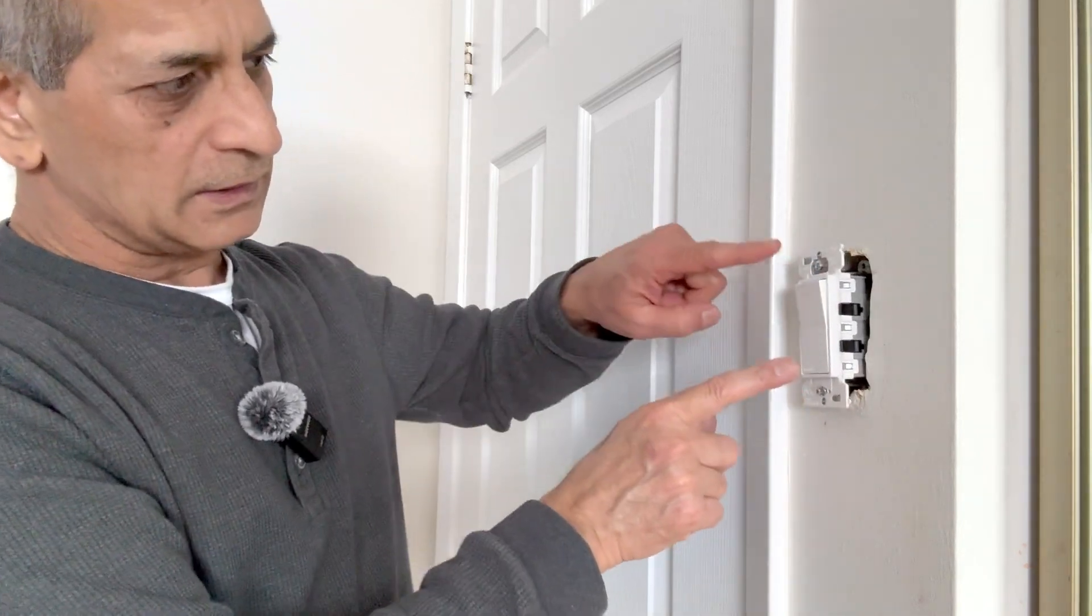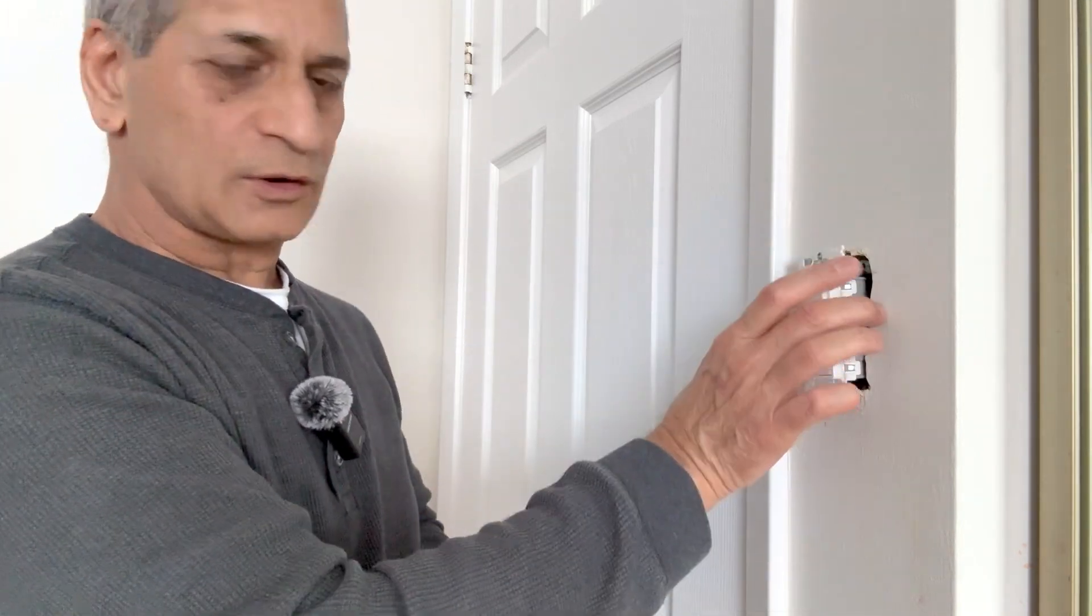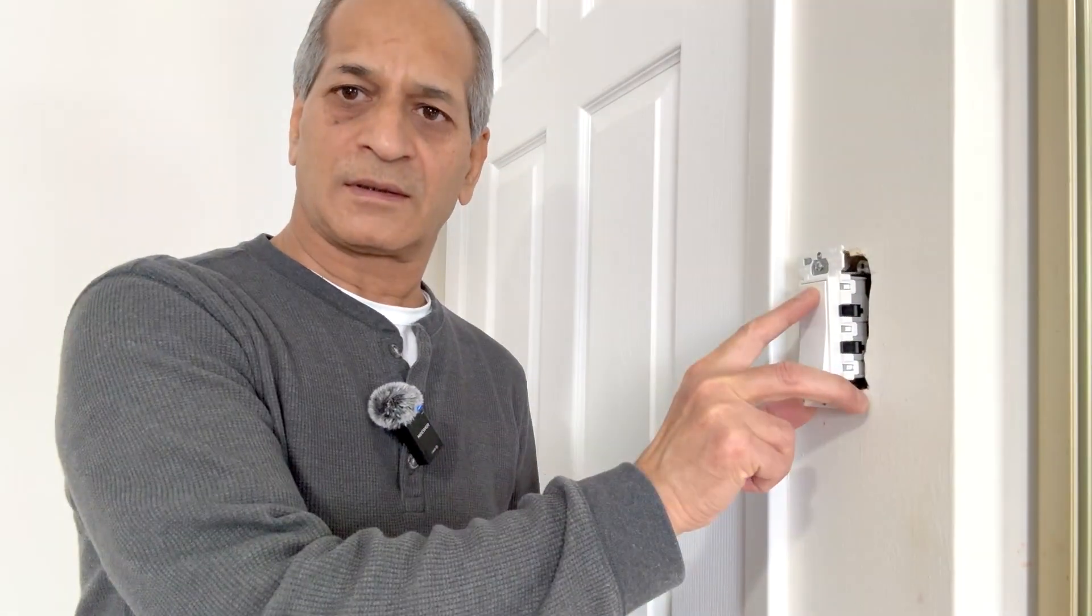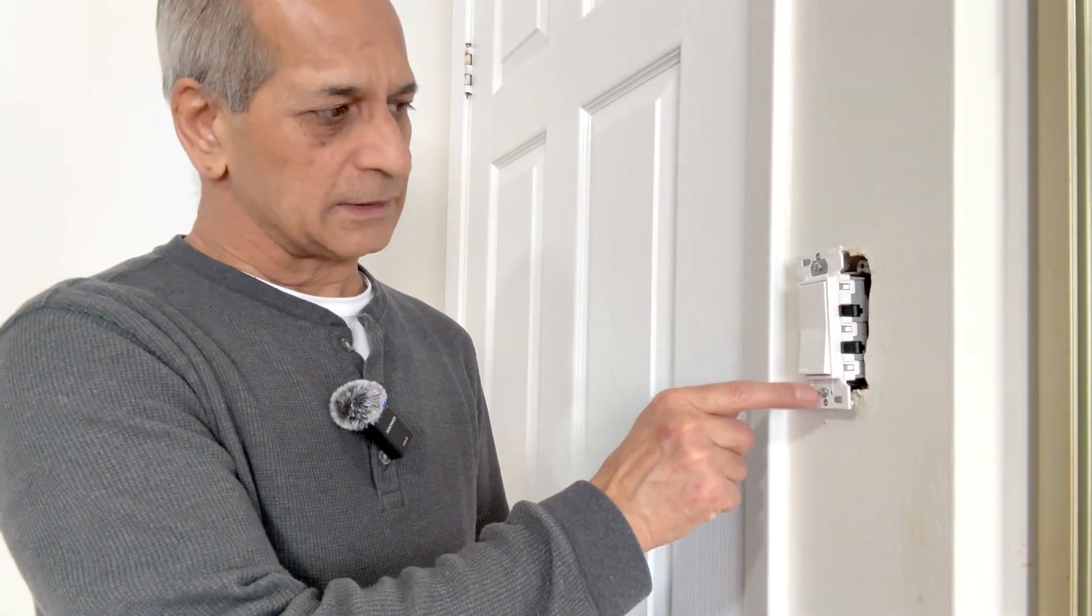I leave it here. Turn on the circuit breaker and then see if the switch is working or not. After that, I will tighten these screws and install the cover plate. The circuit breaker is on. Turn on the switch and the light is on. Now I will tighten these two screws and install the cover plate.